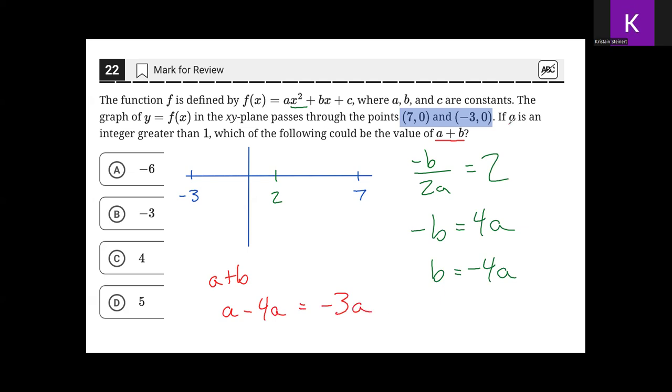It's stated that a is an integer greater than 1. Because it's an integer, that means no fractions or decimals. So a is going to be 2, 3, 4, 5, 6. And it has to be greater than 1, so it could be 2, 3, 4, 5, or 6.